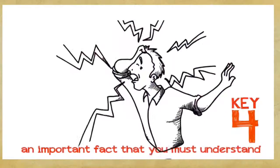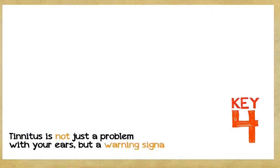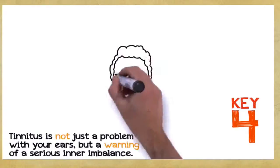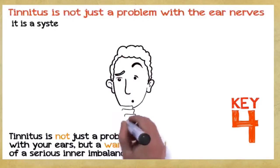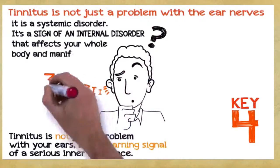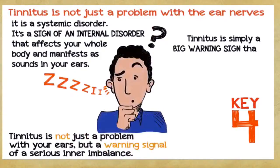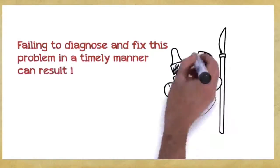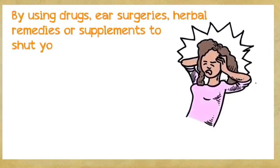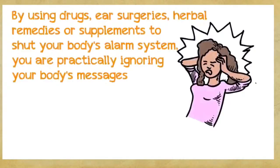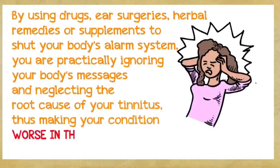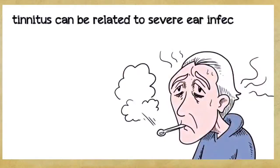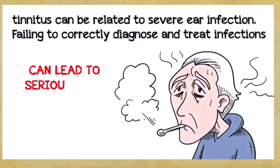Key number four. This is a very important fact that you absolutely must understand. Tinnitus is not just a problem with your ears, but a warning signal of a serious inner imbalance. In the vast majority of cases, tinnitus is not just a problem with the ear nerves, it's a systemic disorder. It's a sign of an internal disorder that affects your whole body and manifests as sounds in your ears. Failing to diagnose and fix this problem in a timely manner can result in a far more severe and chronic disorder. For example, tinnitus can be related to severe ear infection. Failing to correctly diagnose and treat infections can often lead to serious long-term health consequences.